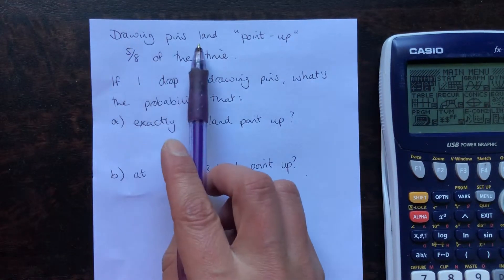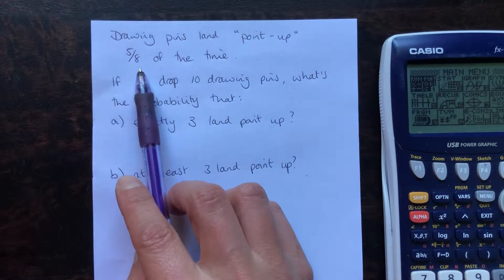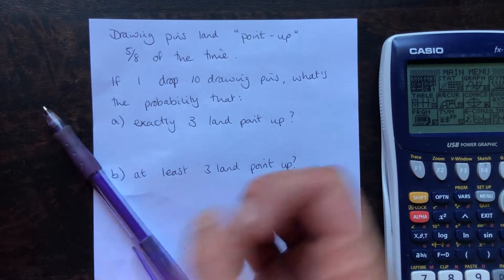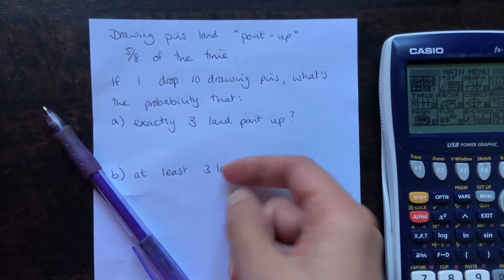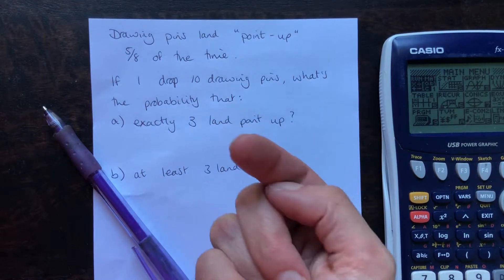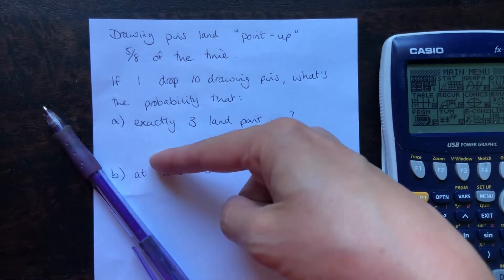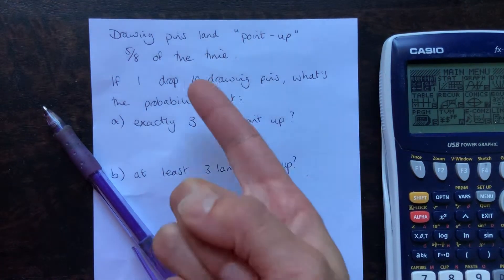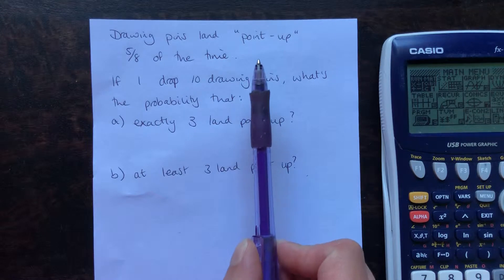Let's have a look at this example. We've got drawing pins that land point up five-eighths of the time. If you drop a drawing pin, usually it will land with the flat bit down, the circle piece down and the point sticking upwards. Sometimes it will land sideways on with the point down. So, five-eighths of the time, it will land point up.